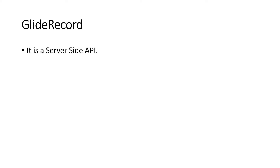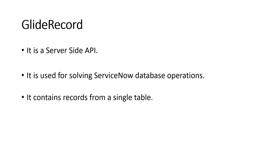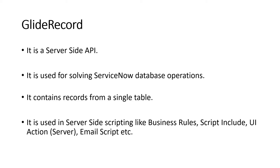GlideRecord is a server-side API — already mentioned in the last video. It is used for handling ServiceNow database operations: querying data, looking for particular records. If you think about SQL — Structured Query Language — that same kind of work you're going to do inside ServiceNow using GlideRecord. It contains records from a single table, so at one time you can only provide one table name. It is used in server-side scripting: business rules, script includes, UI actions, email scripts, and many other places.